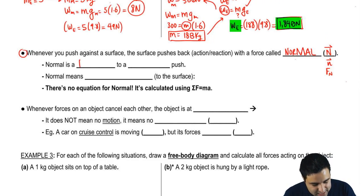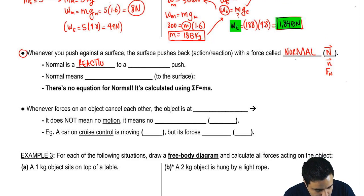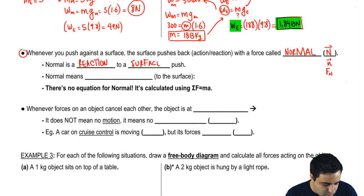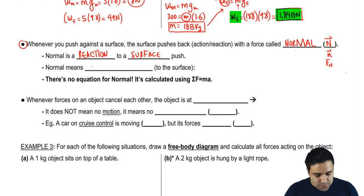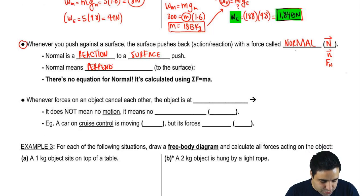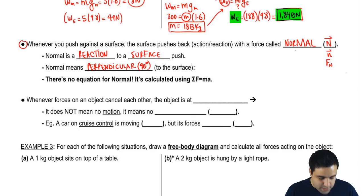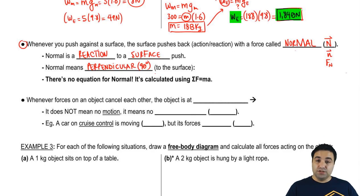Normal is a reaction to a surface push — if you push on a surface, there's a normal force. Normal means perpendicular, which is an engineering term meaning 90 degrees — perpendicular to the surface.